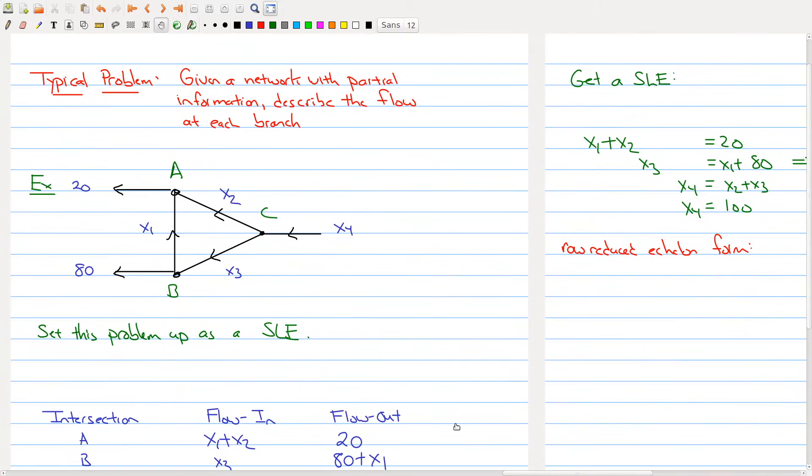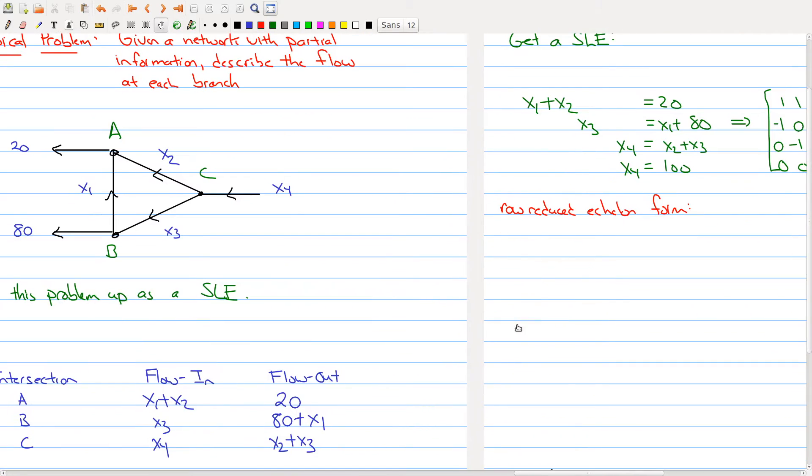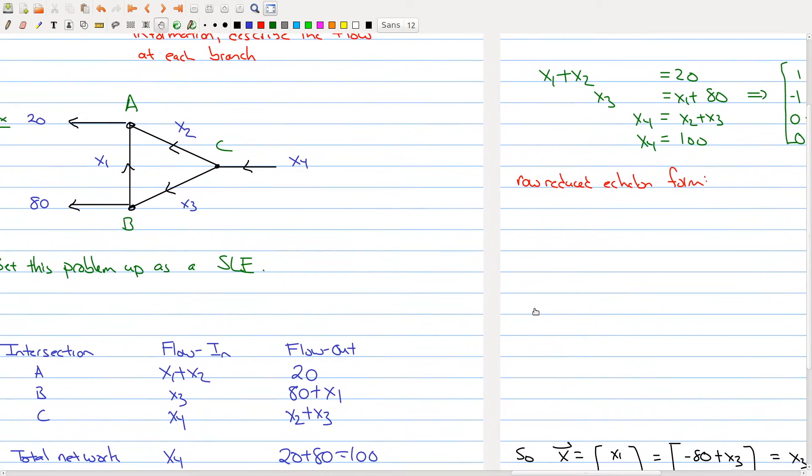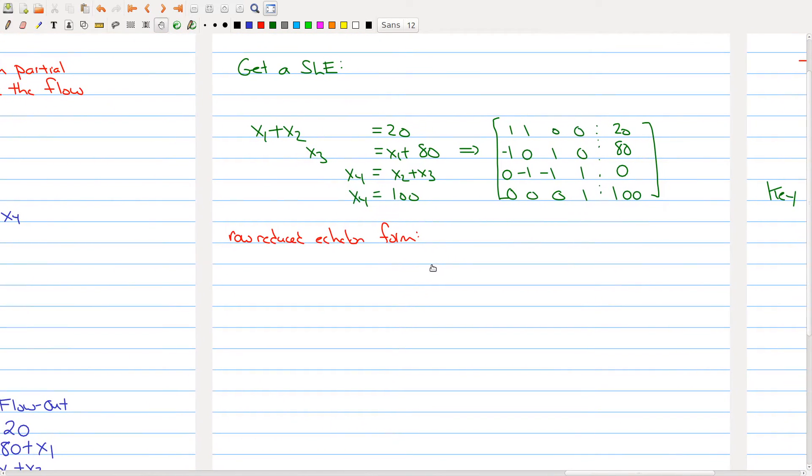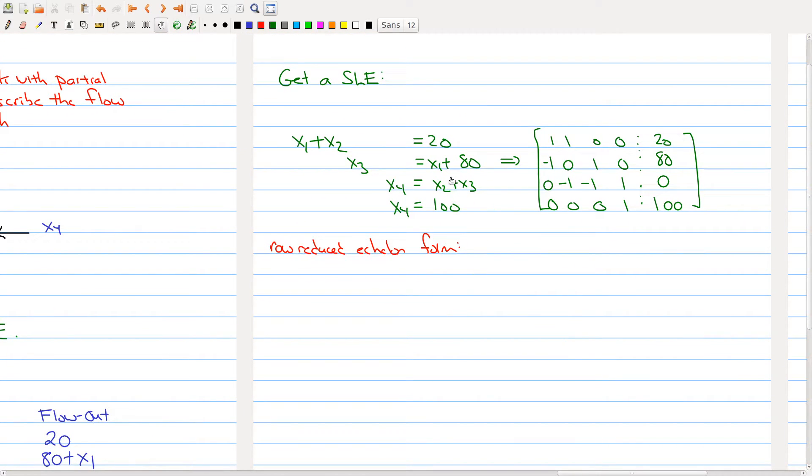I'll move to my next slide where I actually did this. So x1 plus x2 has to equal 20. x3 has to equal 80 plus x1. x4 has to be x2 plus x3. And x4 has to equal 100. So I can take that and get a system of linear equations. I did a little rearranging so all the x's are on one side and what it equals on the other side.